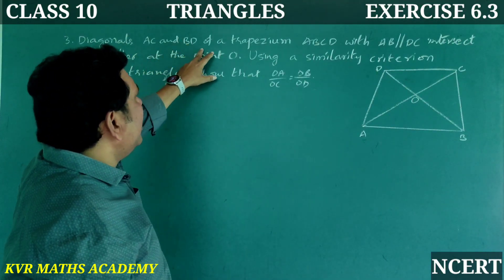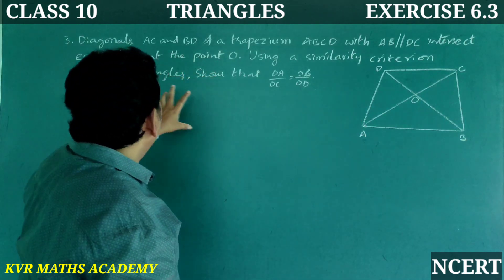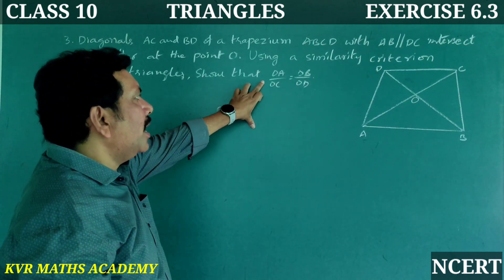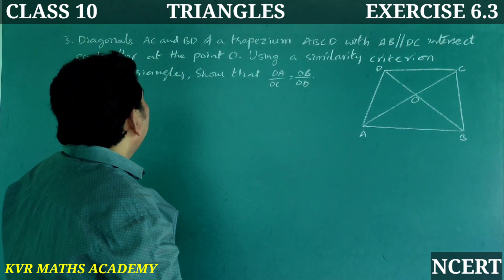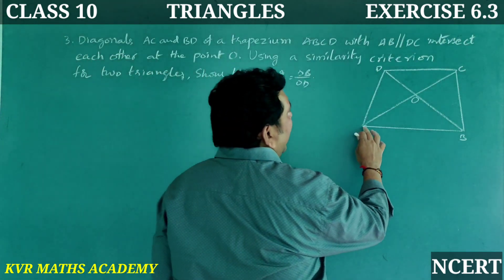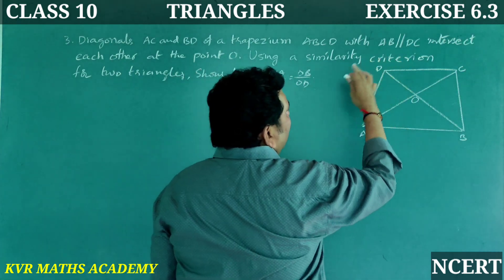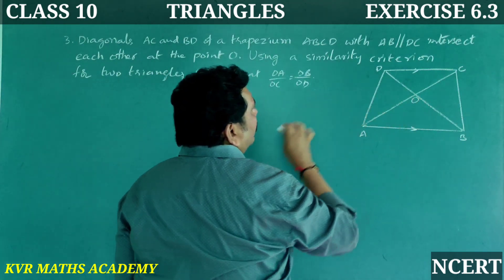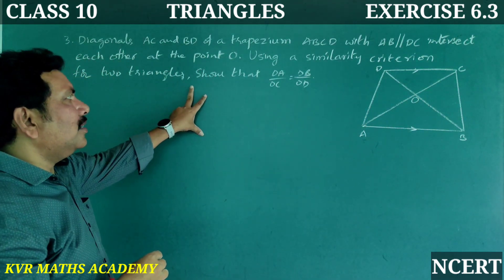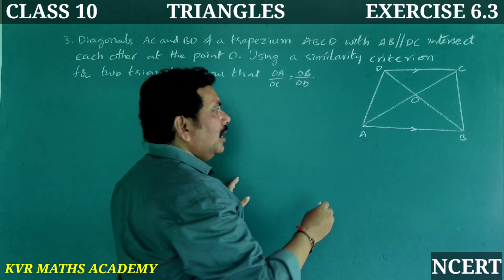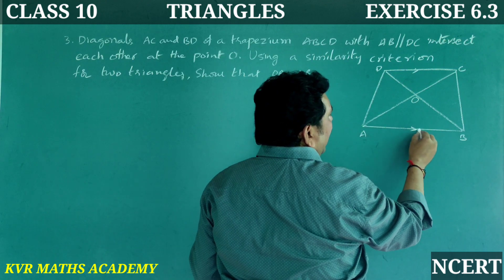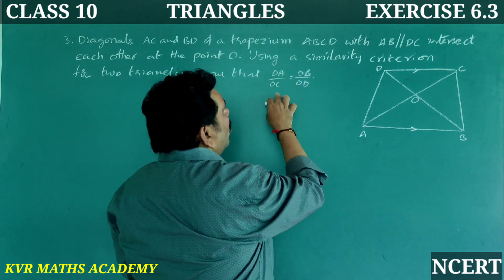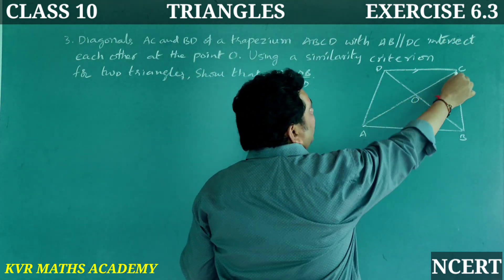Third question: Diagonals AC and BD of a trapezium ABCD, with AB parallel to DC, intersect each other at point O. Using a similarity criterion for two triangles, show that OA by OC is equal to OB by OD.